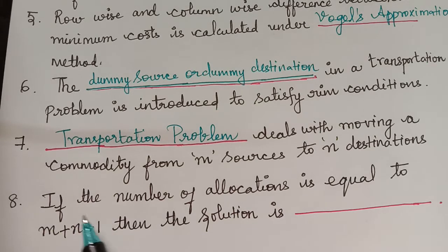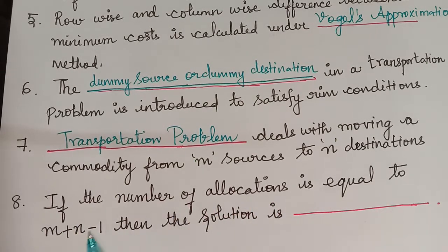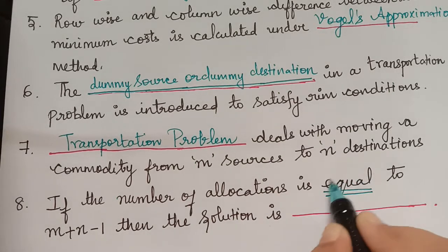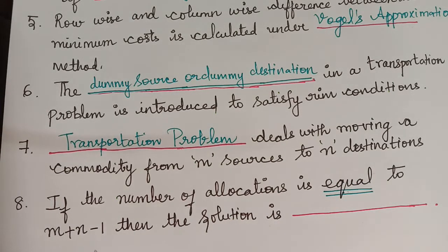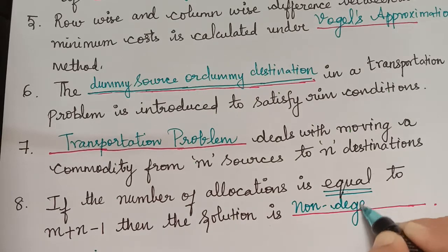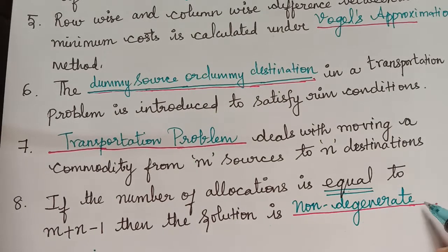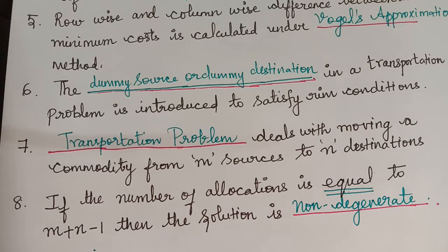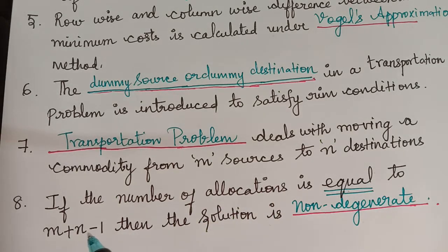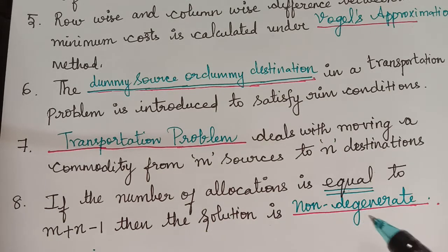The next question is: if the number of allocations is equal to m plus n minus 1, then the solution is dash. When the number of allocations is equal to m plus n minus 1, it is a non-degenerate solution. If it is less than m plus n minus 1, it is a degenerate solution. This is the key difference between degenerate and non-degenerate solutions.